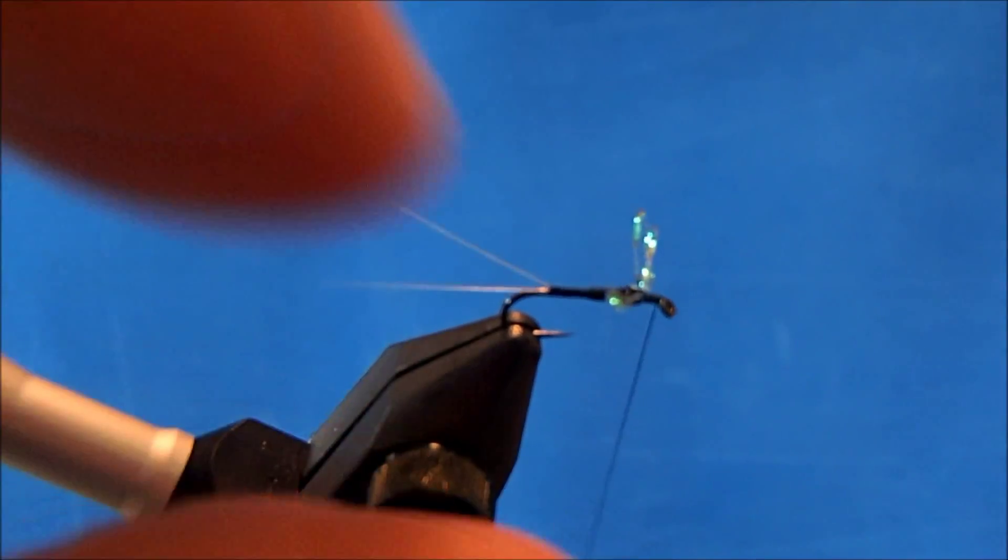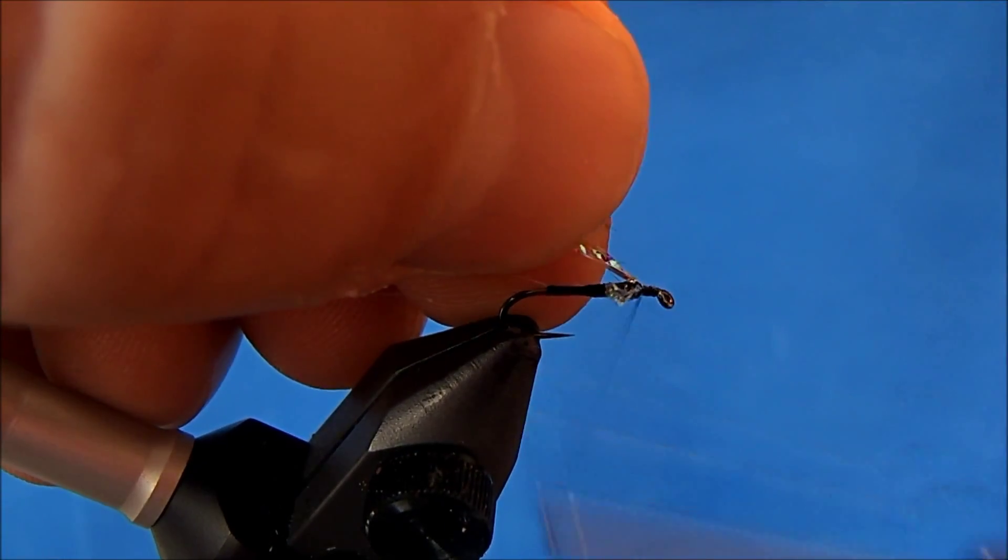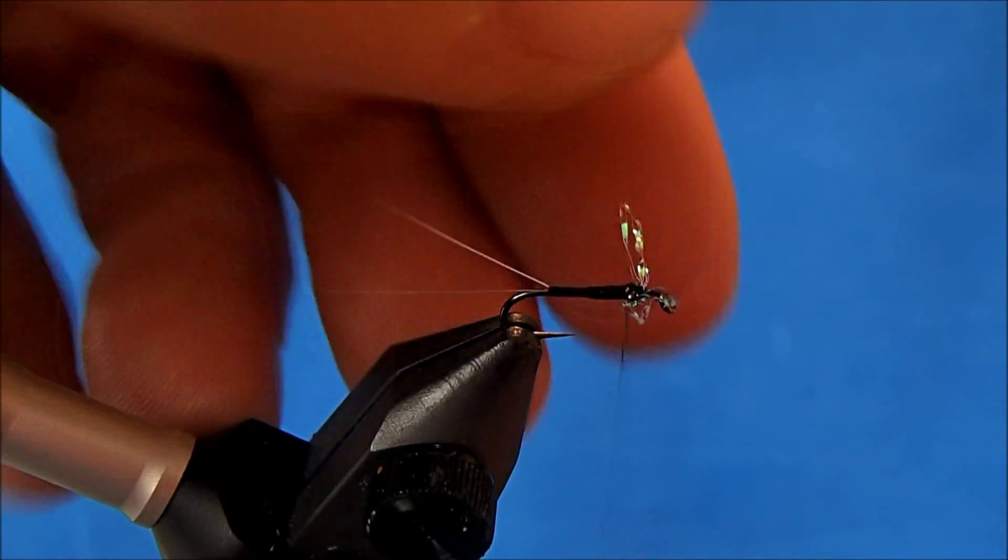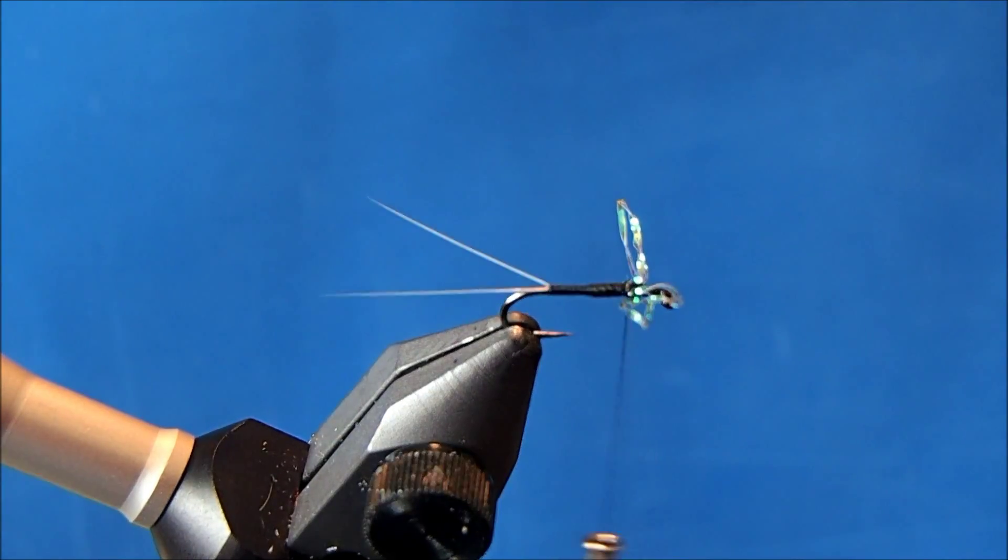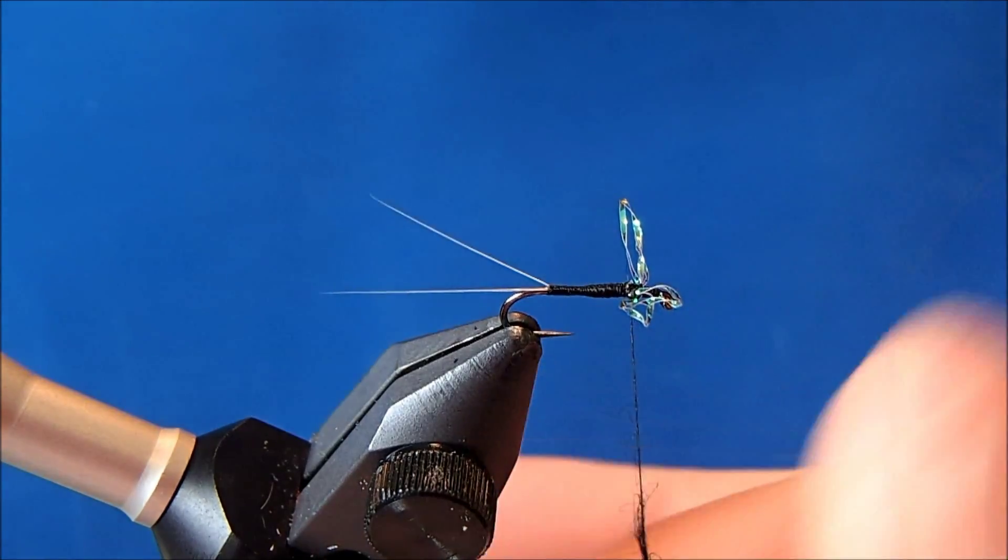Now the final step to this is to put some dubbing on here. I'll use a black dry fly dubbing for this. Take a handful of pinches and just dub in and around the wings.